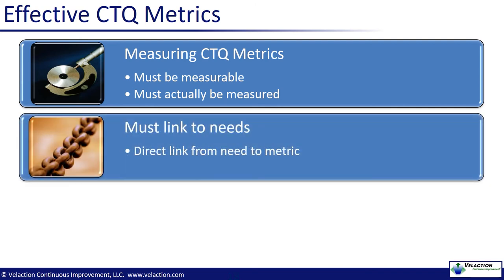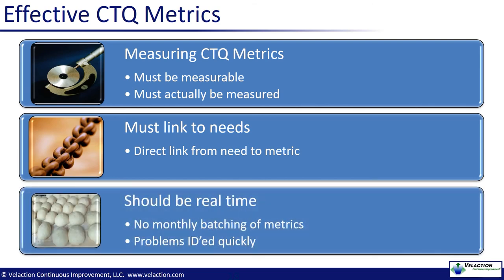One of the main reasons that a CTQ tree is used is that it visually shows the linkage between metric and need. It is easy to lose focus when putting together a set of metrics — this tool helps retain that focus. At least some and preferably most of your CTQ metrics should be real-time and focused on processes. The goal is to give frontline teams a means to make sure that they are meeting customer needs. Waiting until the end of the month to review a single number is too late. Try to get at least daily metrics and preferably measure even more frequently than that. Remember what the C stands for: if the metric is truly critical, it would be hard to measure too often.